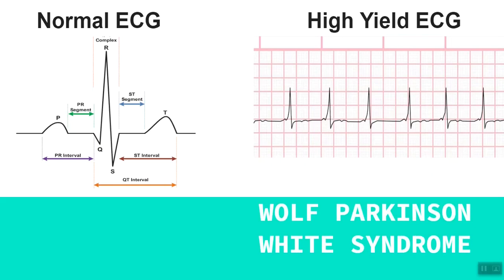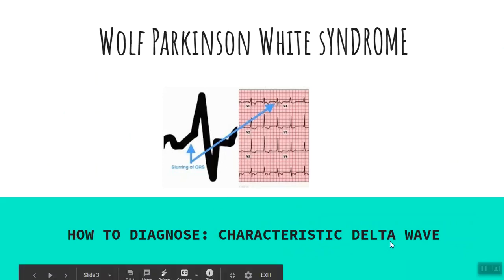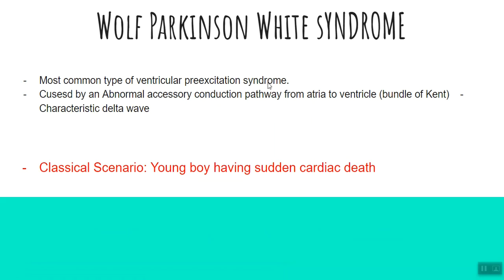I hope you're thinking Wolf-Parkinson-White syndrome — a super high-yield syndrome. The ECG of Wolf-Parkinson-White syndrome has a characteristic slurring of its upstroke, also known as a delta wave. The Q upstroke has a clear slurring, and in an exam you can easily diagnose it if you know what a delta wave looks like. Wolf-Parkinson-White syndrome is the most common type of ventricular pre-excitation syndrome. The cause is the presence of an abnormal accessory conduction pathway between the atria and the ventricle, called the bundle of Kent — a very high-yield fact. Please keep an eye out for the classic scenario of a young patient having sudden cardiac death with a delta wave on ECG.